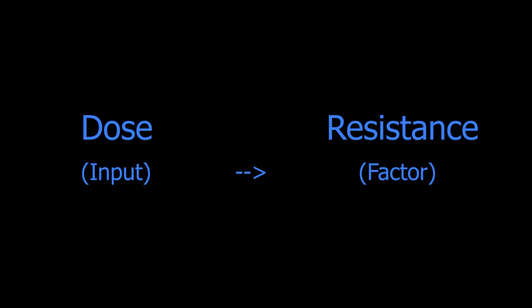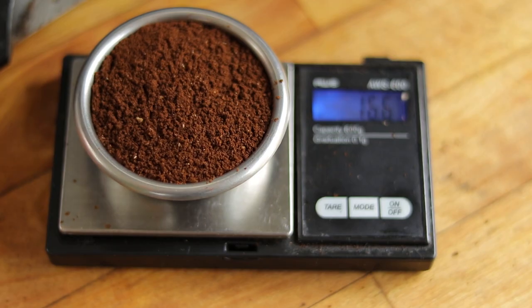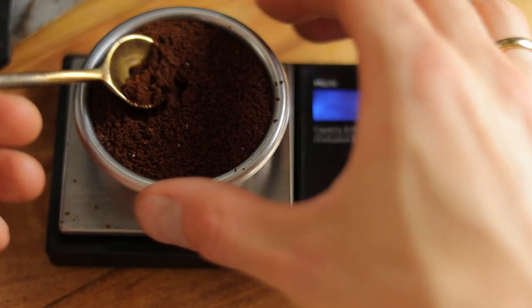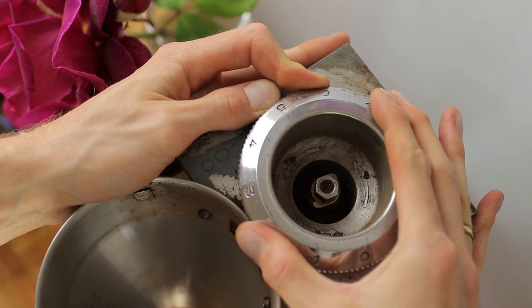Dose. The other primary input to adjust is dose — how much coffee you put in your portafilter. Smaller doses with less coffee produce less resistance because there is less distance to travel. This effect is large; I can manipulate how long it takes to make a shot by several seconds by just changing the dose by a pinch. Because of this, I'll often let dose be the final input I consider, as it helps me make more precise adjustments than my grinder can with its crude settings.